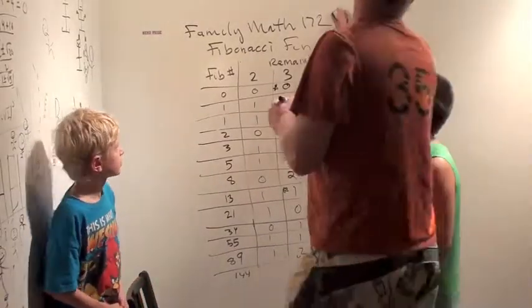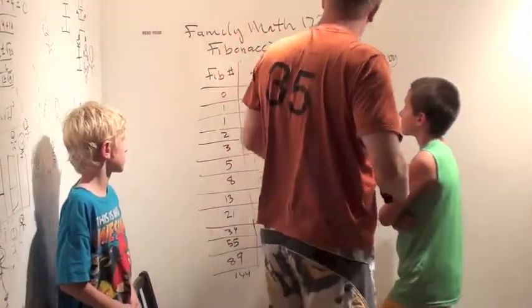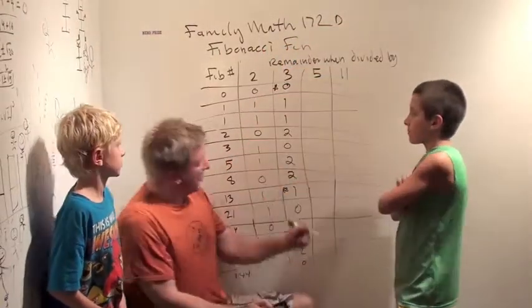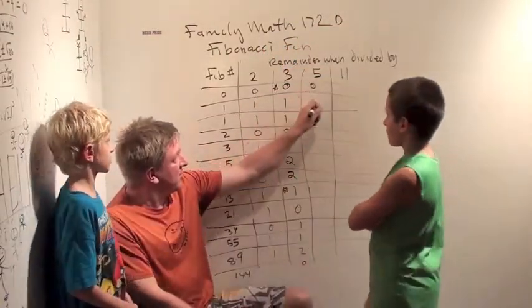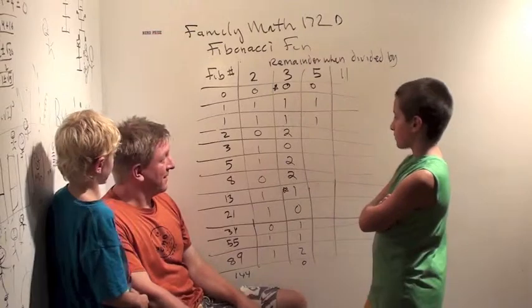Okay, so now we're going to move on to 172D and look at the divisibility of the remainder when you divide by 5. So it starts 0, 1, 1. Okay, what comes next?